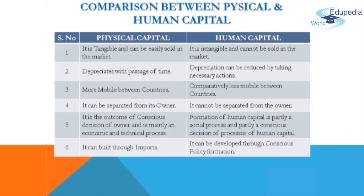Next, physical capital like machinery and factories can be separated from its owner, whereas human capital like skills of a person — doctor, engineer — cannot be separated from the owner. Next, physical capital is the outcome of conscious decision of the owner and is mainly an economic and technical process, whereas formation of human capital is partly a social process and partly a conscious decision of the possessor of human capital. And the last difference is physical capital can be built through imports, whereas human capital formation is to be done through conscious policy formulations.